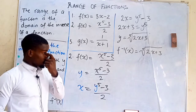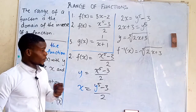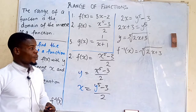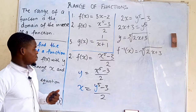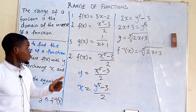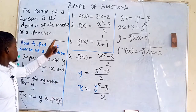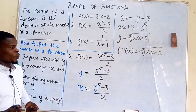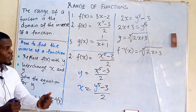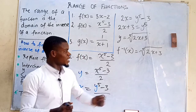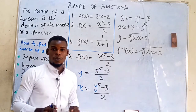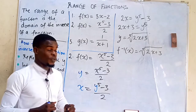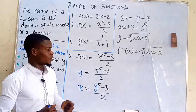Since we've found the inverse of that function, we now need to find the range of the original function. That means we need to find the domain of the inverse, because the set of all real numbers that make the inverse defined is its domain — which is the range of the original function.